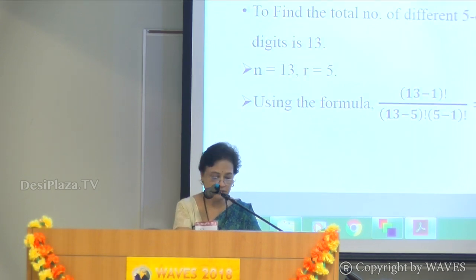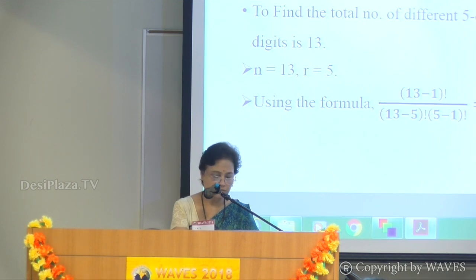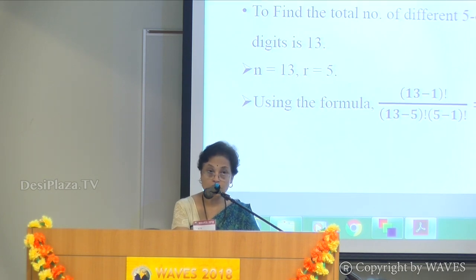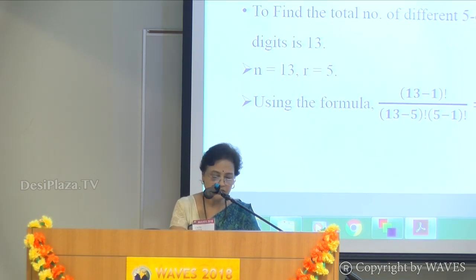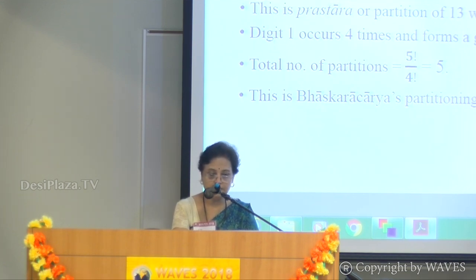The example based on the above rule is given in the next verse: Panchasthana sitaihi aankaihi — so there are 5 places, meaning it is a 5-digit number. Yogas trayodashaha — the sum of the digits is trayodash, meaning 13. He asked to find the total number of different 5-digit numbers when the sum of digits is 13. According to this formula the answer comes out to be 495. When the digits whose sum is 13 are arranged amongst themselves, the numbers formed also have the same sum of digits. So the partition of 13 can be written in 5 partitions — this is the prasthara, or partition, of 13.